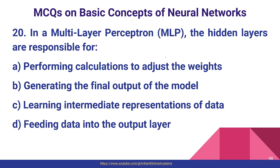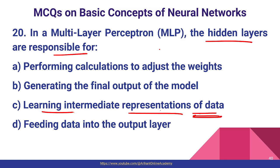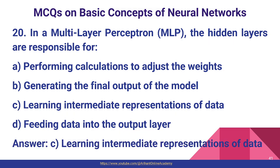Last question: in a multi-layer Perceptron, what are the hidden layers responsible for? The hidden layers are responsible for learning the intermediate representation of data. Options like performing calculations to adjust, generating final output, or feeding data to the output layer are incorrect. Option C — learning intermediate representation of data — is correct.